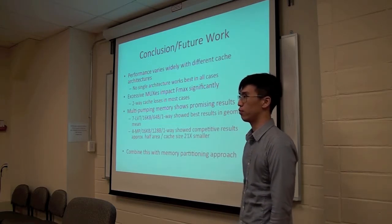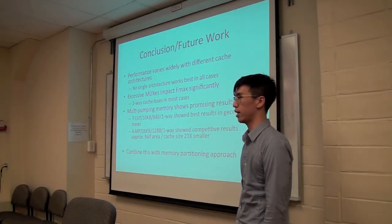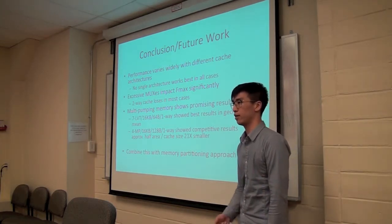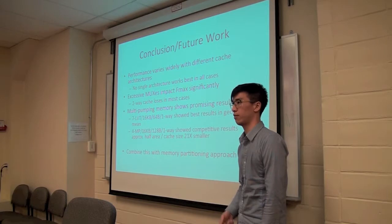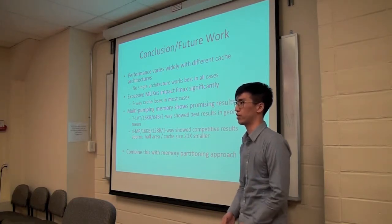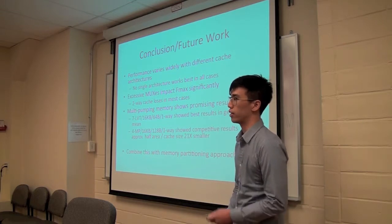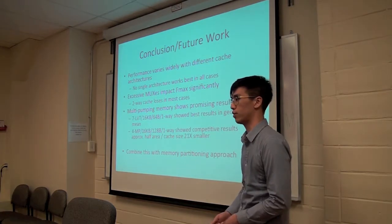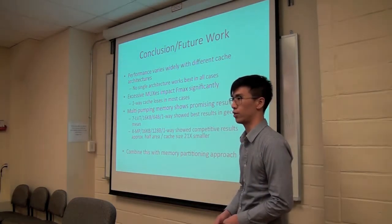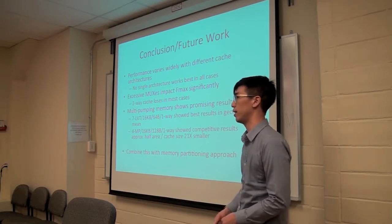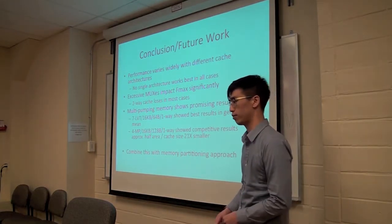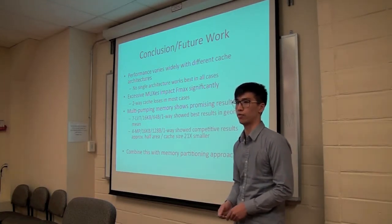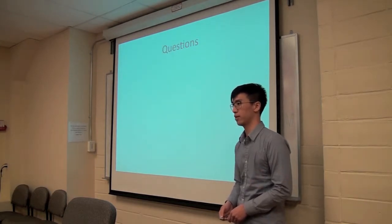So in conclusion, you can see that performance varied widely with different cache architectures, and there is no single cache architecture that exhibits the best results in all the cases. And in terms of FPGAs, excessive muxing will impact the Fmax significantly, which causes most of the two-way systems to lose in a lot of cases. But multi-pumping does show very promising results, and even though the seven-port LVT shows the best results, the four-port MP comes very close with approximately half of the area, and cache size, which is 0.1x smaller. Future work would be to combine this method with the memory partitioning approach to allow a larger number of accelerators and processors. So that's it for this talk.